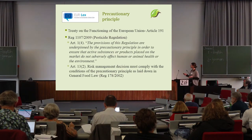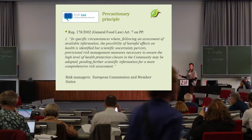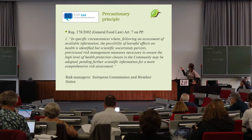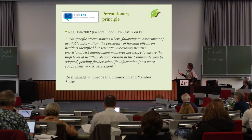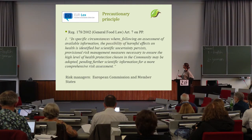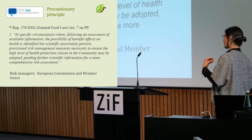Article 13 says risk managers have to take the precautionary principle into account. The General Food Law, a wider piece of legislation, clearly states that if available information shows harm to health identified by scientific assessment, provisional risk management measures can be taken to ensure the high level of health protection chosen by the community. The risk managers here are the European Commission and member states.